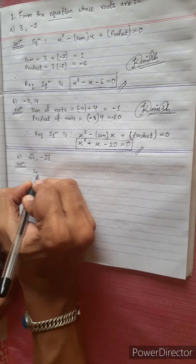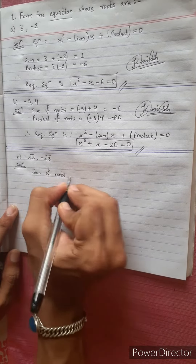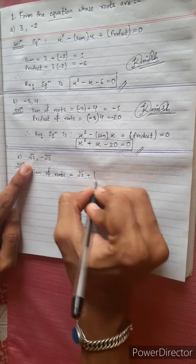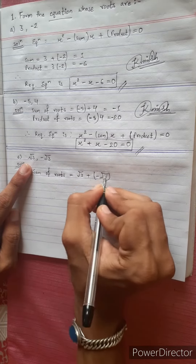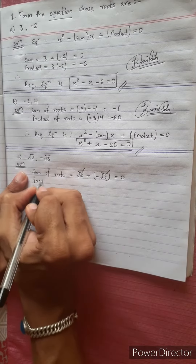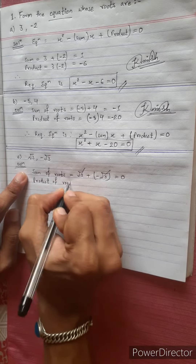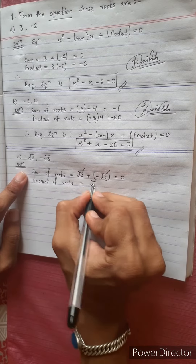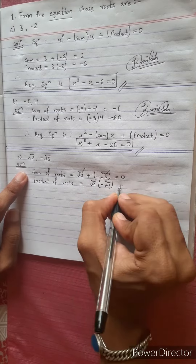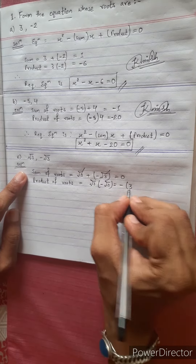I will show you the sum of roots. Under root 3 plus minus under root 3. You will see the sum of roots equals 0. Now the product of roots: under root 3 multiply minus under root 3, which gives minus under root 3 into under root 3. It will be minus 3.